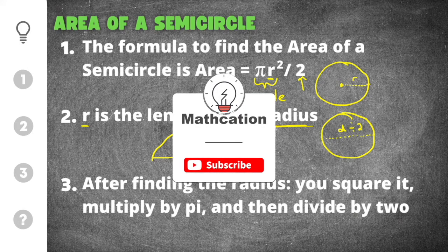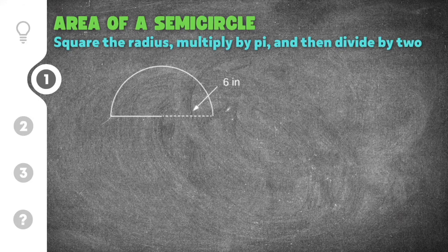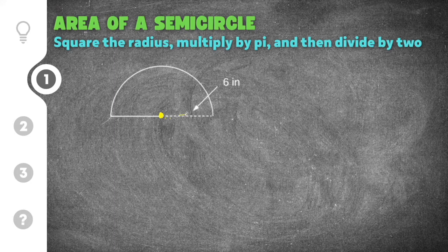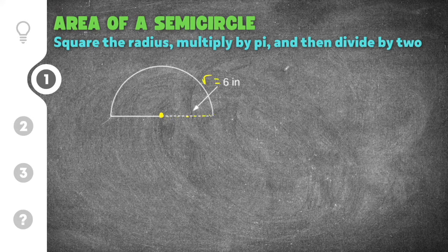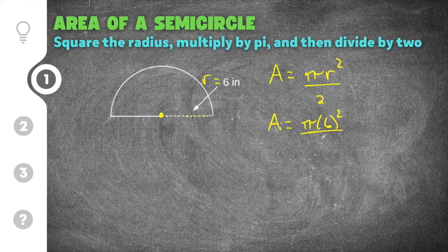Don't forget to subscribe so you don't miss out on other helpful math videos. Let's get started on our first practice problem. This problem gives us a semicircle labeled with six inches for a dashed line. That dashed line runs from the center out to the outer edge, which means it is the radius, so we can use it directly in our formula: area equals pi times r squared divided by two, with r equal to six.